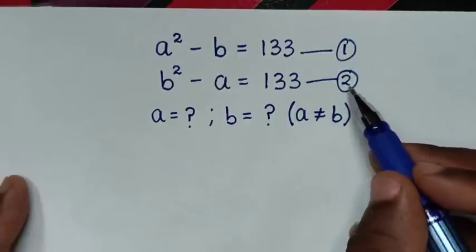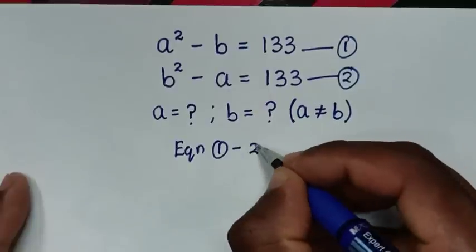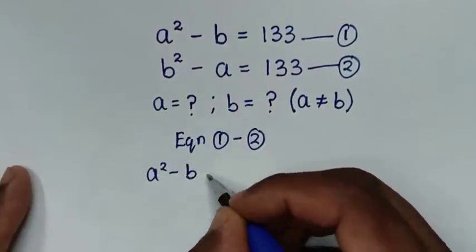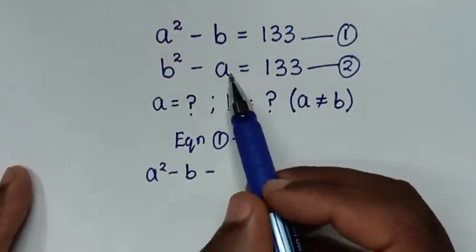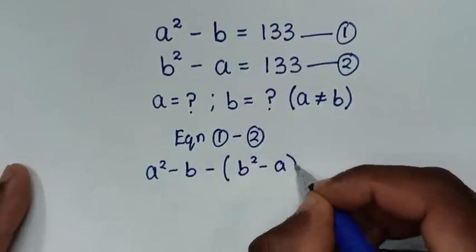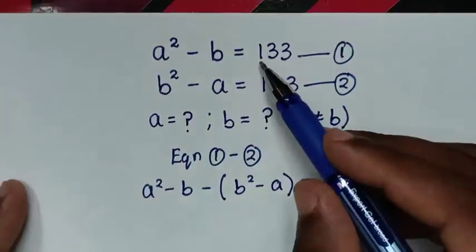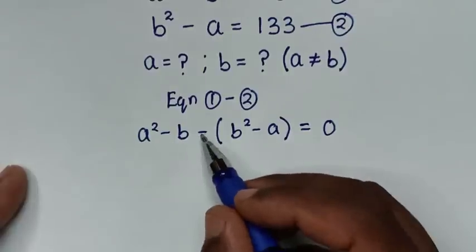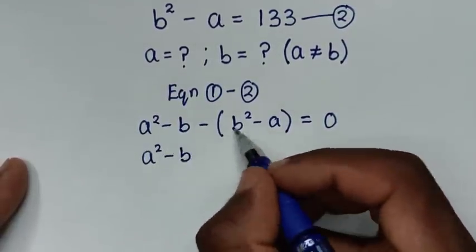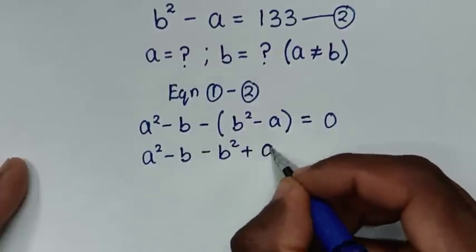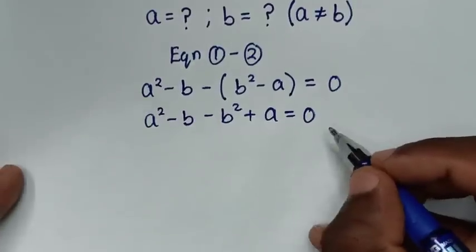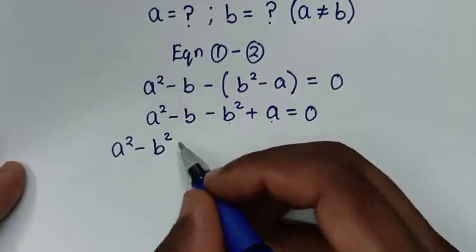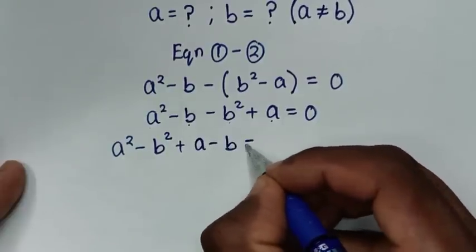We take equation 1 minus equation 2. From equation 1 the left side is a squared minus b, then minus equation 2 whose left side is b squared minus a, giving a squared minus b minus (b squared minus a) equals 133 minus 133 which is 0. Opening the bracket: a squared minus b squared plus a minus b equals 0.